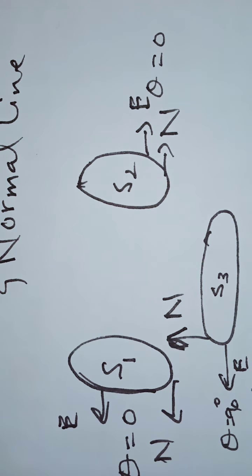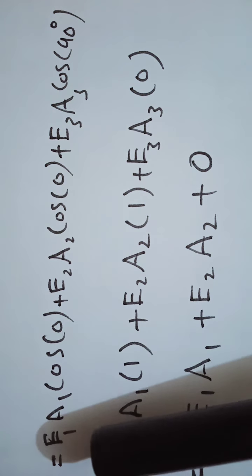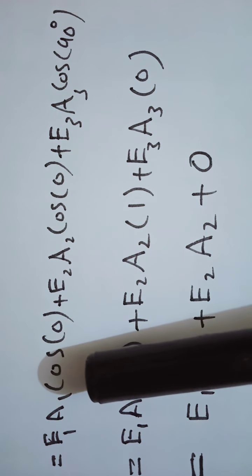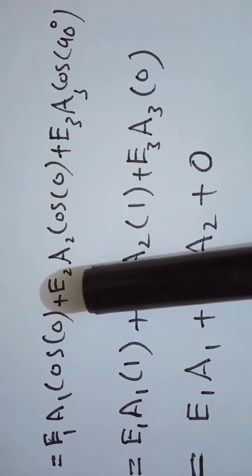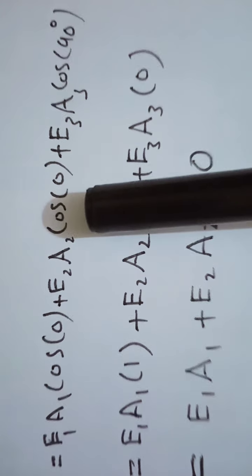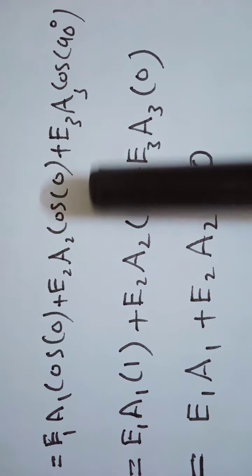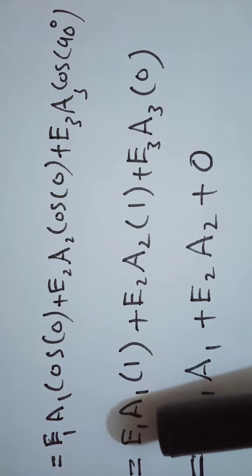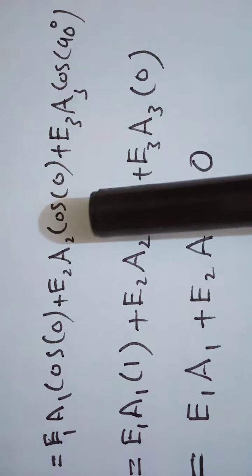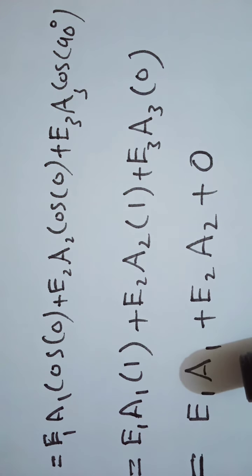Substituting the angles into the derivation: phi = E1·A1·cos0° + E2·A2·cos0° + E3·A3·cos90°. Since cos 0° equals 1, the first two terms give E1·A1 and E2·A2. Since cos 90° equals 0, the third term vanishes. So phi equals E1·A1 + E2·A2.